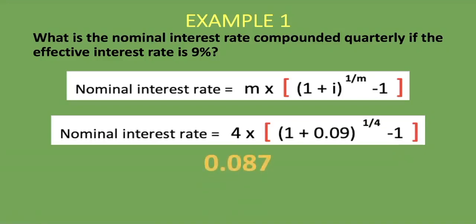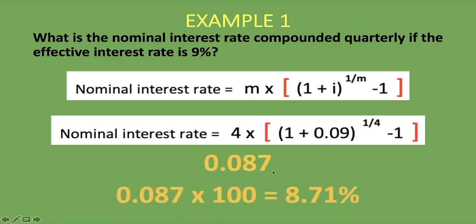The calculation gives us 0.0871, and multiplying by 100 gives 8.71% — that is the nominal interest rate compounded quarterly when the effective interest rate is 9%. You can see it's lower than 9%, confirming we've done it correctly. If your answer differs slightly — say 8.70 or 8.72 — that's just a rounding difference. That's how easy it is to calculate the nominal interest rate.